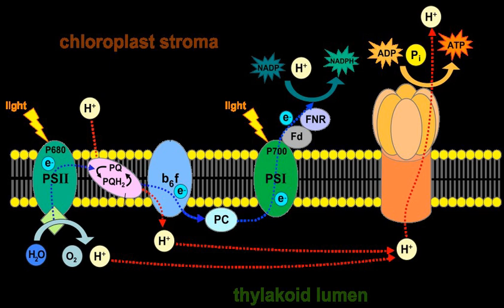The thylakoid membrane contains some integral membrane protein complexes that catalyze the light reactions. There are four major protein complexes in the thylakoid membrane: photosystem II, cytochrome B6F complex, photosystem I, and ATP synthase. These four complexes work together to ultimately create the products ATP and NADPH.